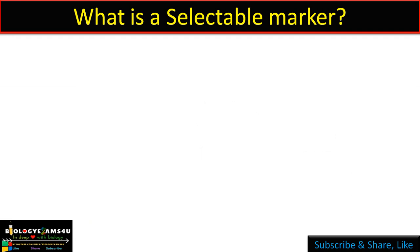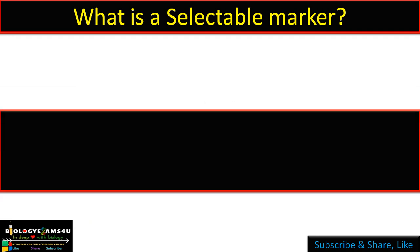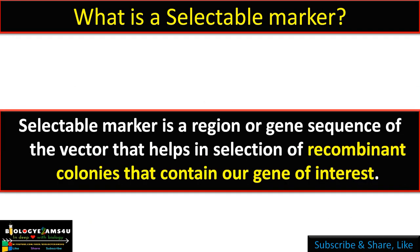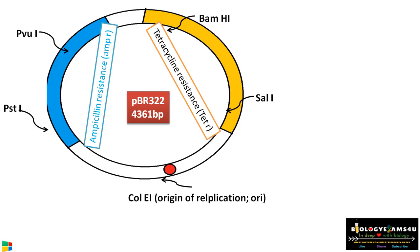A selectable marker is a region or gene sequence of the vector that helps in the selection of recombinant colonies that contain our gene of interest. Let's take the example of the PBR322 vector for understanding this concept.